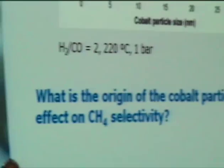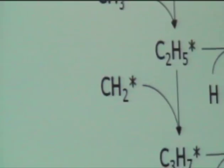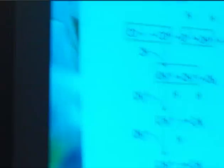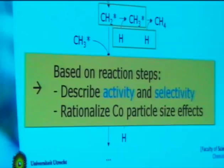To answer those questions, we took one step back and looked into the Fischer-Tropsch mechanism. In this mechanism you can discern several steps: CO activation, oxygen removal to form water, carbon-carbon coupling to form longer hydrocarbons, and hydrogenation steps. We asked ourselves: what happens when we change the particle size with respect to the amounts and residence times of the Fischer-Tropsch intermediates — CO, CHX, OHX, and hydrogen? If we have insight into those amounts and residence times, we can in principle describe the activity and selectivity using simple reaction equations, and thereby understand the cobalt particle size effect.